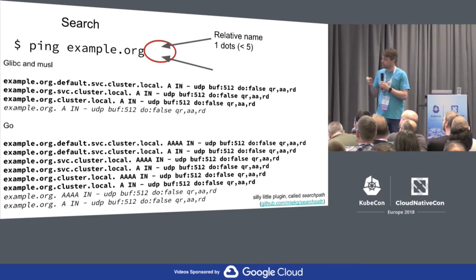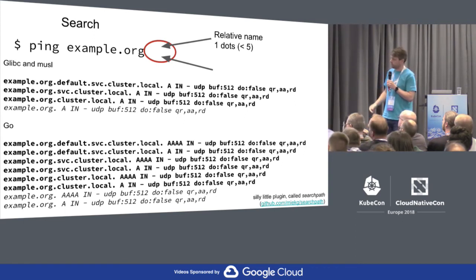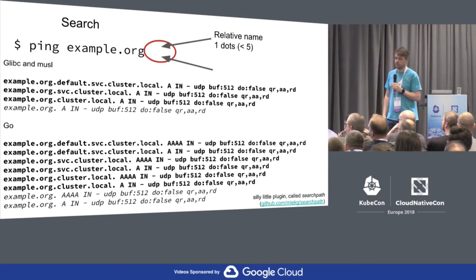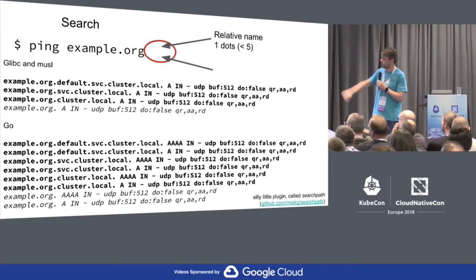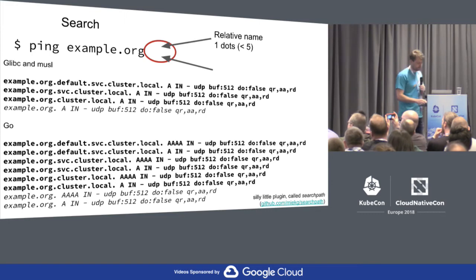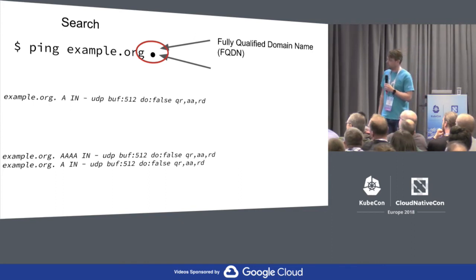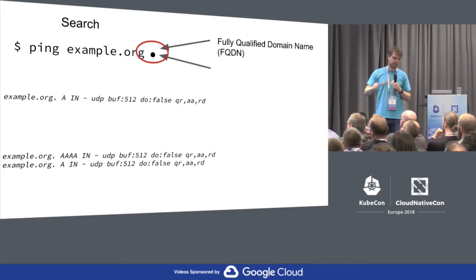In my testing setup I use ping example.org — one dot, fewer than five. What do I see? All the search path queries I just described. In Go it's worse but actually more standard-wise correct, because it does AAAA as well, which doubles the query load yet again. But if you just add the trailing dot, you see only what you actually want. So make the damn things fully qualified.